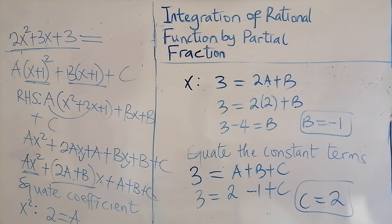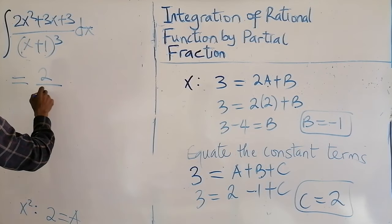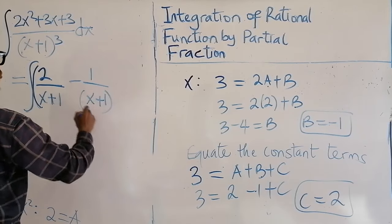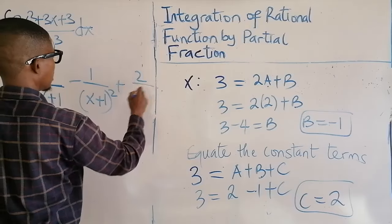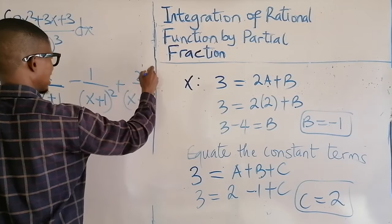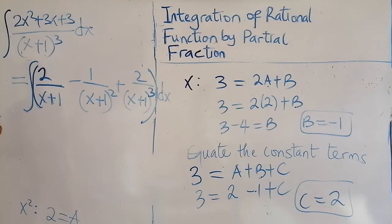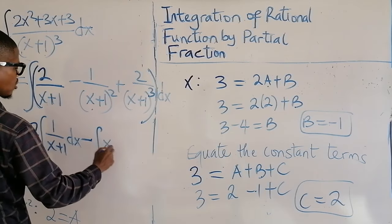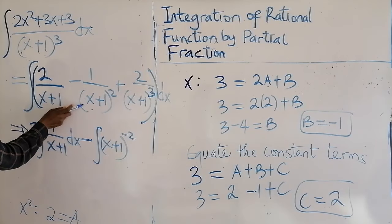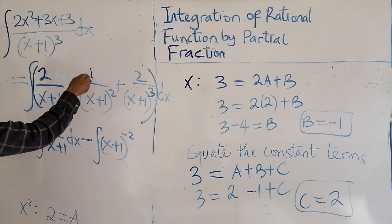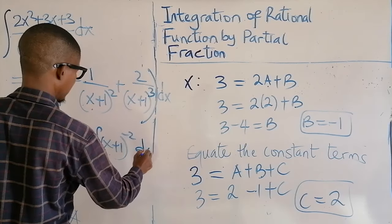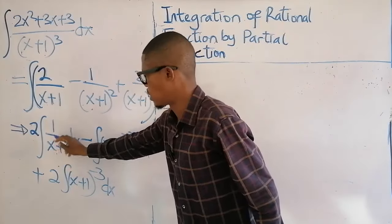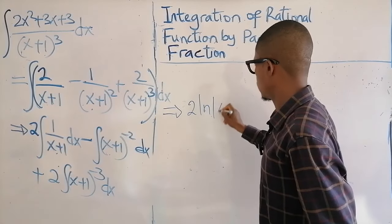Now substituting all the constants: A is 2, B is minus 1, C is 2. So the partial fractions give us the integral of 2/(x+1) minus 1/(x+1)² plus 2/(x+1)³ dx. We can rewrite this as: 2 times the integral of 1/(x+1) dx, minus the integral of (x+1)^(−2) dx, plus 2 times the integral of (x+1)^(−3) dx.